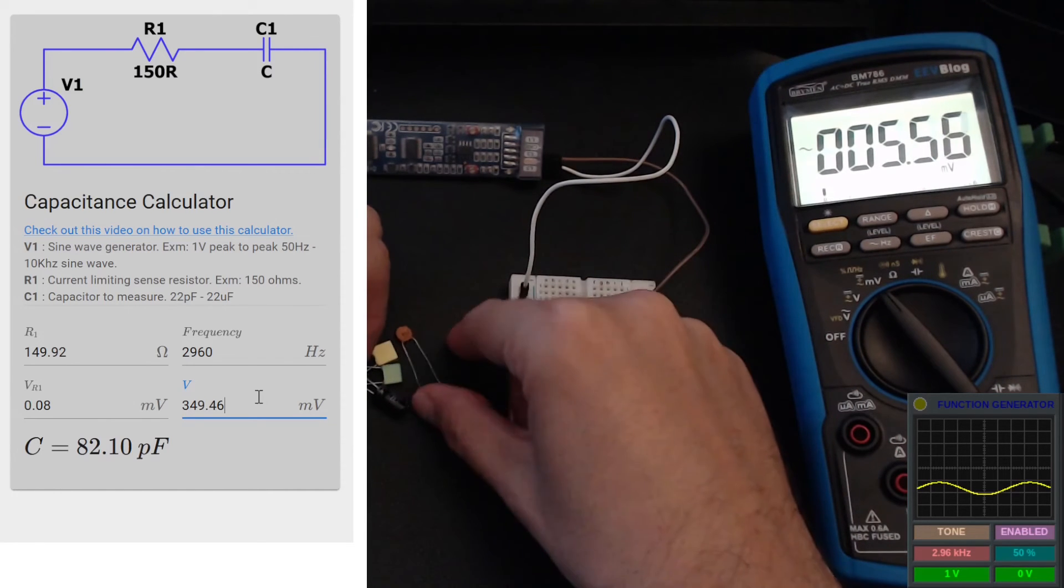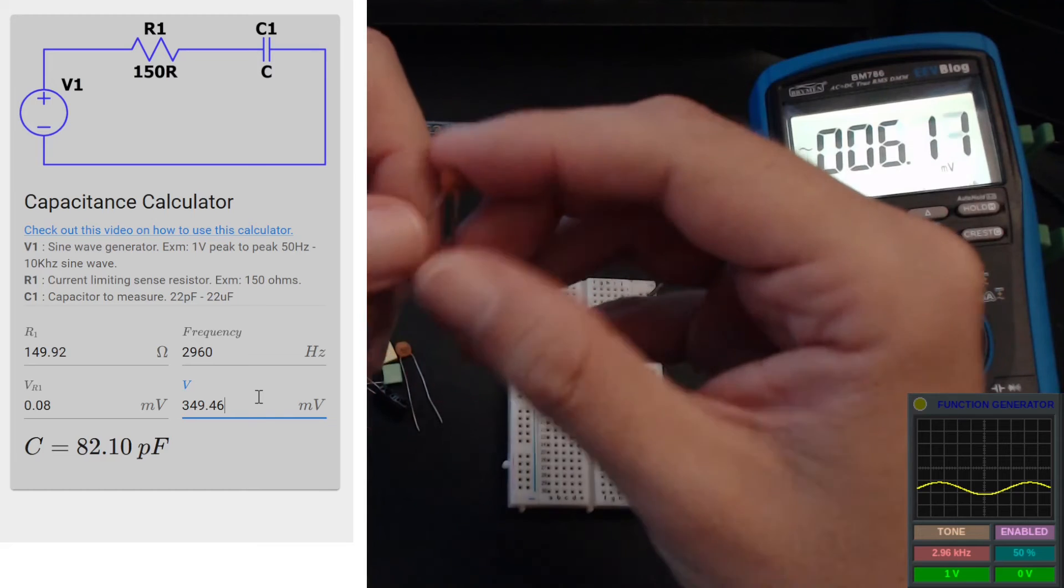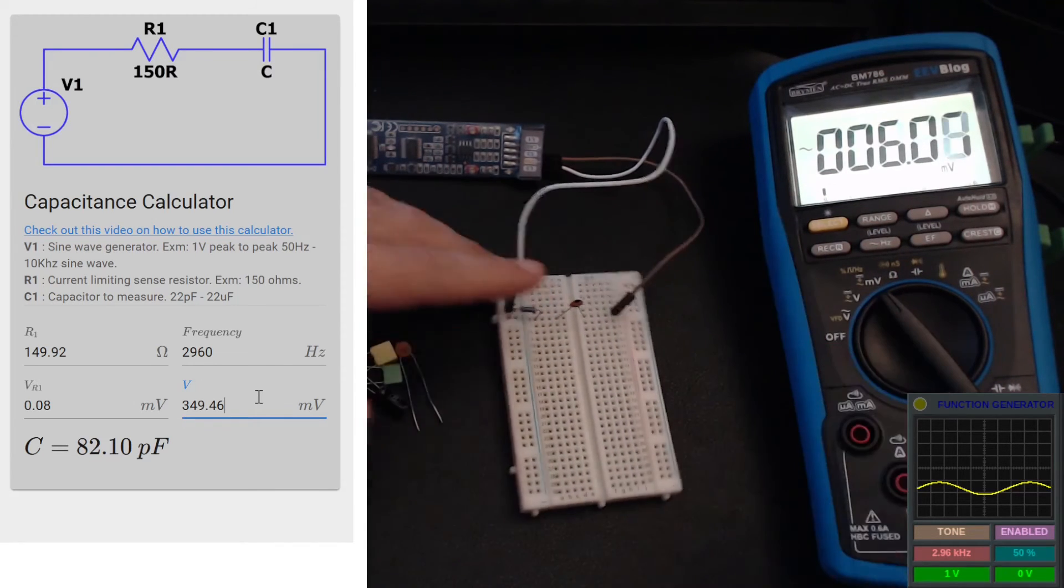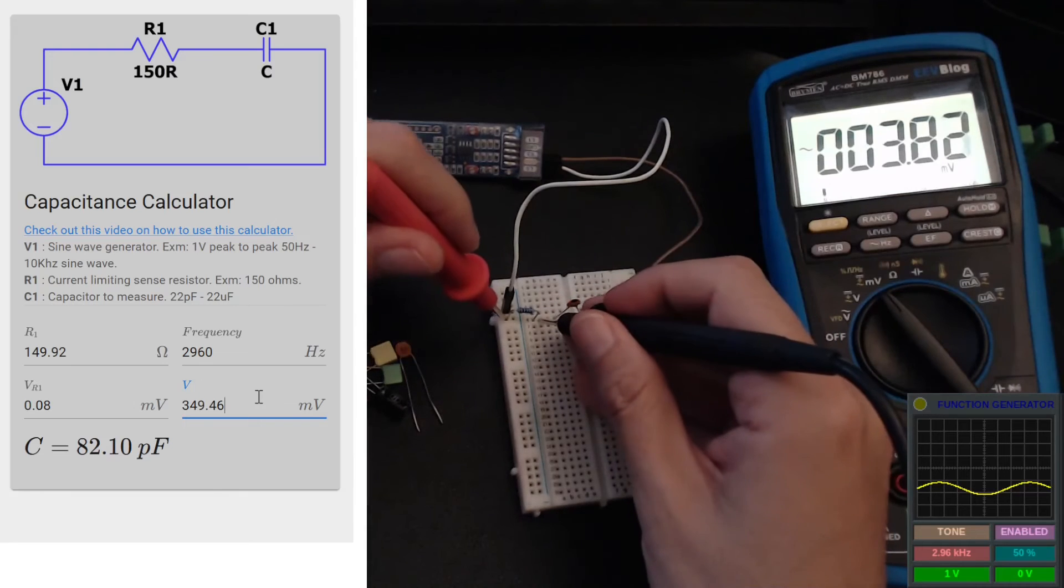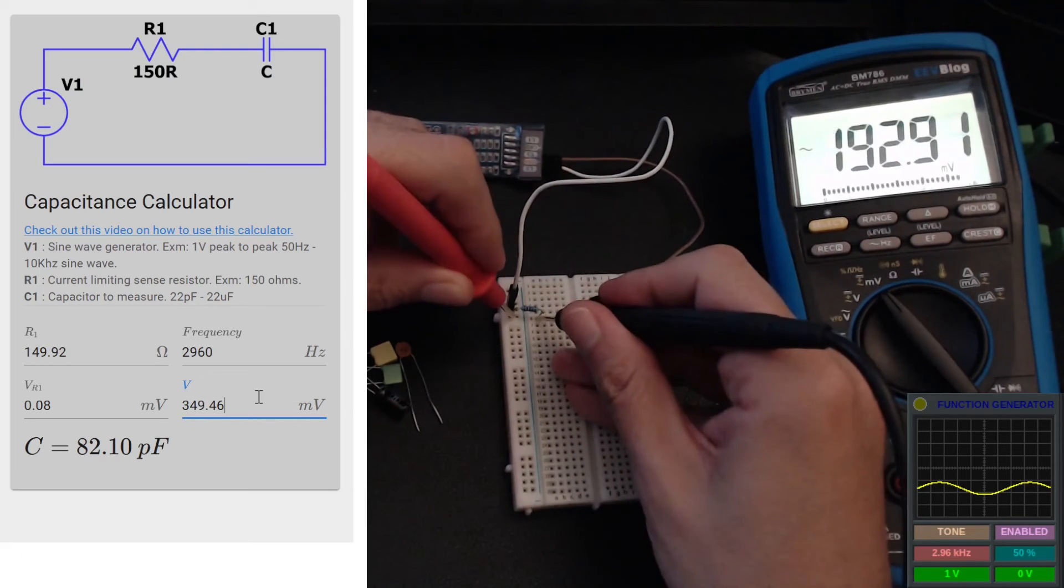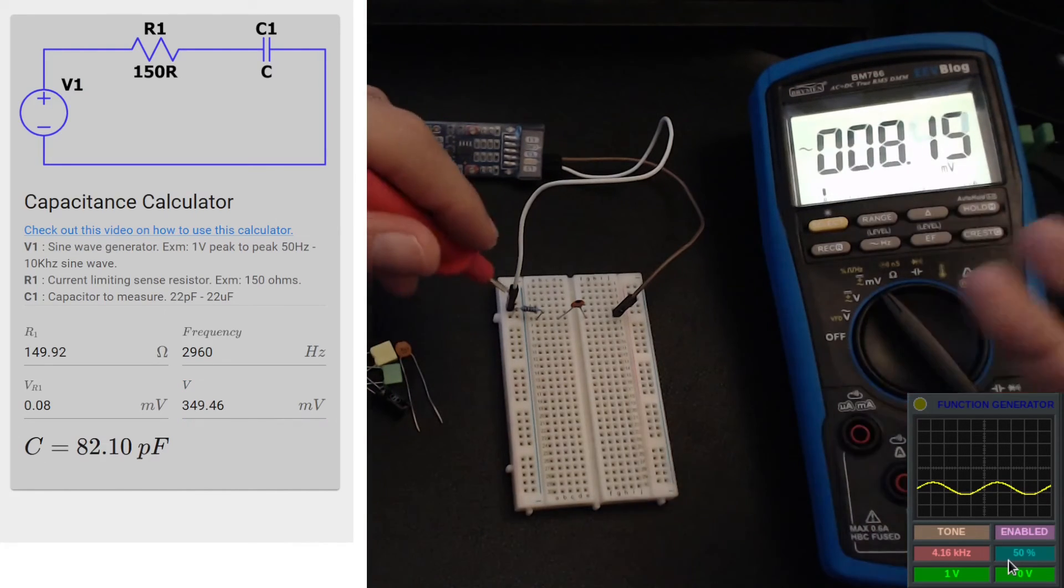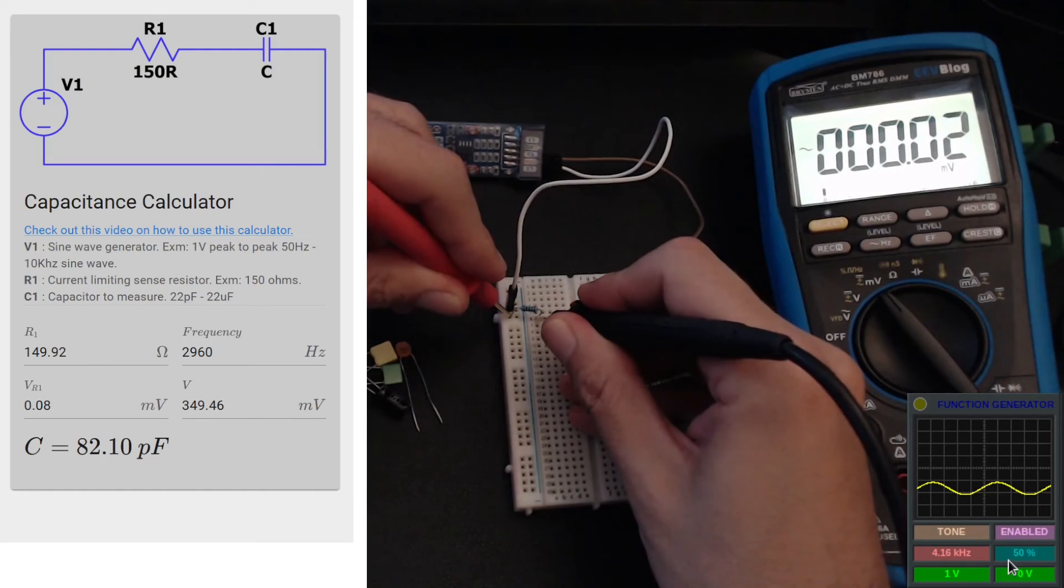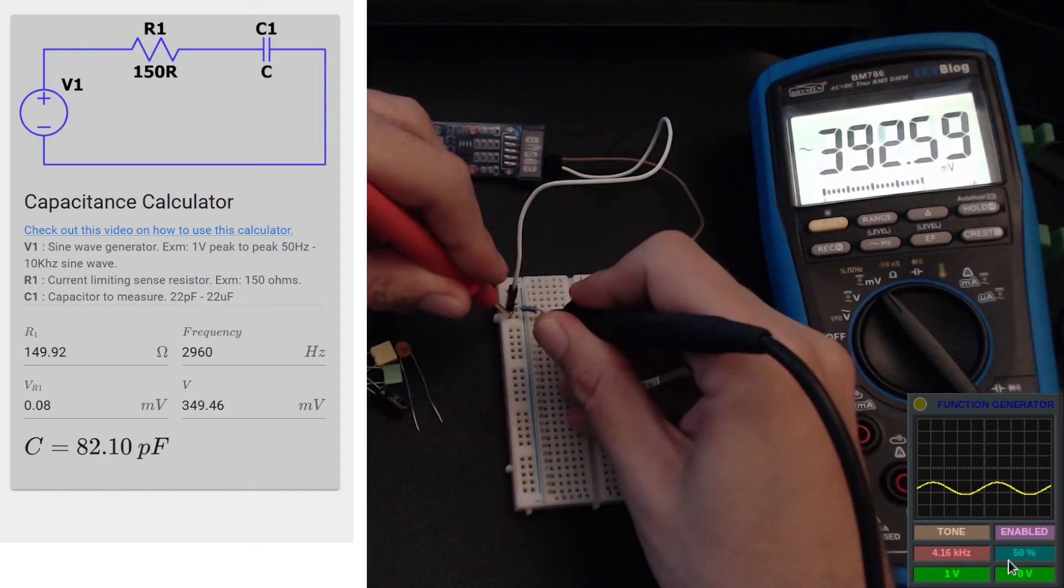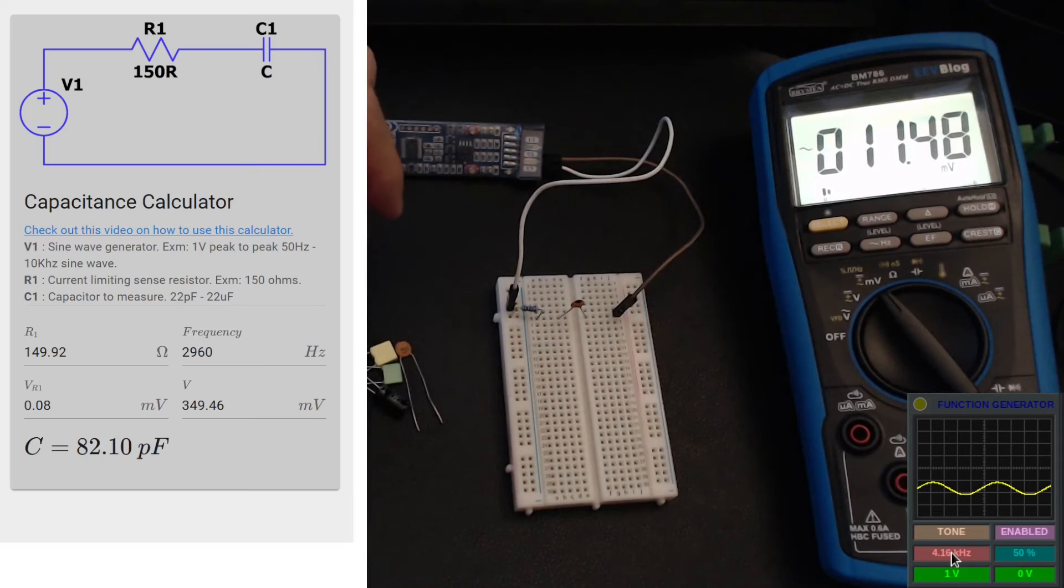Now let's use even a smaller cap which is 22 picofarads. I'm just going to pop it in there and measure the voltage across our resistor. Okay, now we're reading zero - that means again we need to gradually increase the frequency. I'm just going to increment it to four kilohertz perhaps first and see - 0.0203, yeah okay, 0.02 maybe, could be a little bit higher. Maybe let's jump to 5 kilohertz - 0.04, yeah that's good enough.